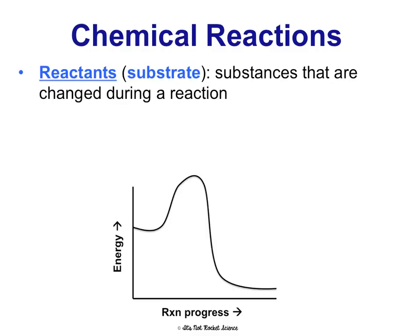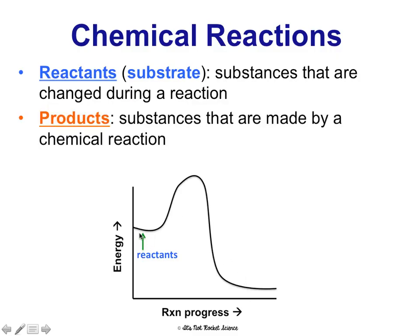Reactants and substrate are referring to the same thing — same exact thing. These are substances that are being changed during a chemical reaction; they're like the ingredients. The reactant is what we start with, always shown on the left side of the diagram. Products are substances that are being made by the chemical reaction, shown on the farther end, because that's towards the end of the reaction.